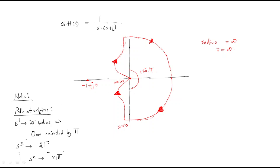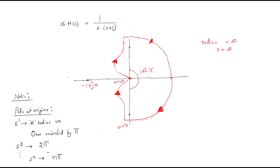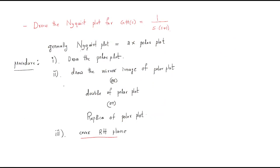Using these concepts we draw the polar plot and then the Nyquist plot. This is the procedure to draw the Nyquist plot and this is the example. Pole at the origin decides some key characteristics. I hope all of you understand this session. Thank you.